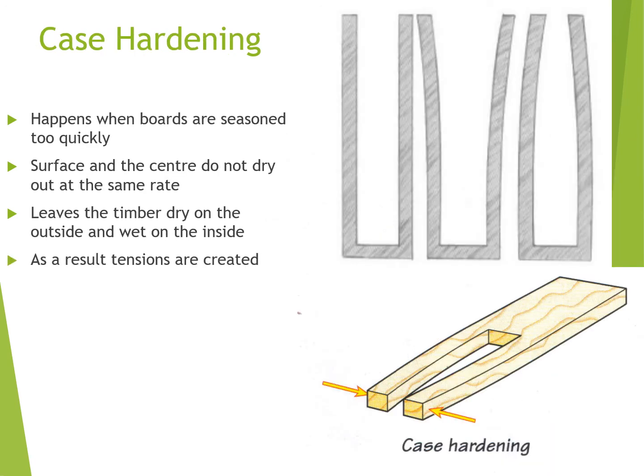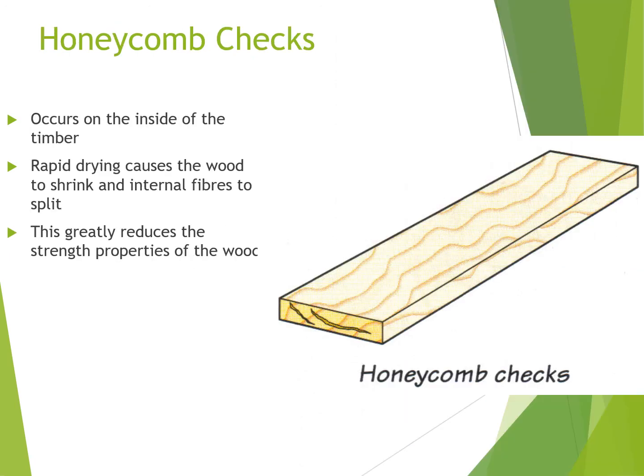Case hardening works like that. Honeycomb checks occur on the inside of the timber — rapid drying causes the wood to shrink and internal fibers to split. This greatly reduces the strength properties of the wood.